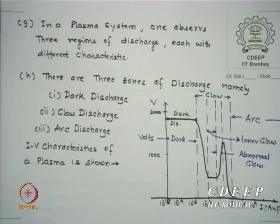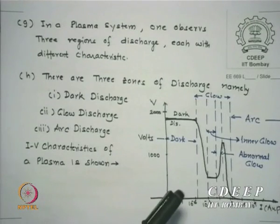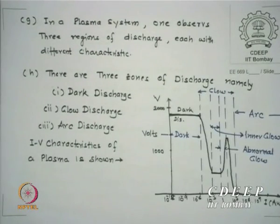The three zones are: dark discharge, glow discharge, and arc discharge. In the first region at around 10 μA current, there is no visible plasma — it is called dark because no plasma exists. Dark zones are plasma-free zones. There may be ions but not enough electrons to interact. Only when electrons and ions come together is light seen — that is called the glow.